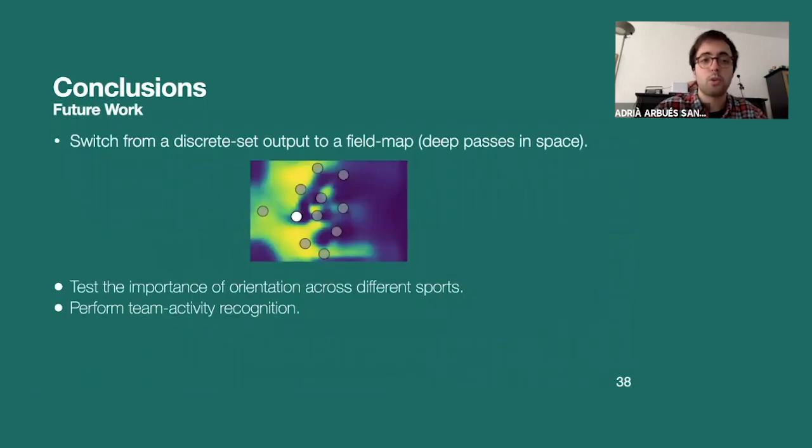In terms of future work, we would like to switch our discrete set of outputs to a field map because the pass does not only go to the receiver, it can also go to the space in front or behind the receiver. So we want to change it to a map. And at a high level, we would like to check the importance across different sports and perform some kind of team activity recognition as well.